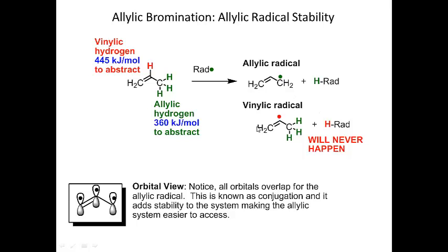The vinyl radical will never form. The allylic radical is always what's formed when you have a choice between the vinyl and the allylic hydrogens.